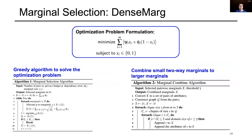Since this optimization problem is NP-hard, we propose a greedy algorithm to select a set of near-optimal marginals. To reduce the number of marginals, we further propose an algorithm to combine small two-way marginals into larger marginals.